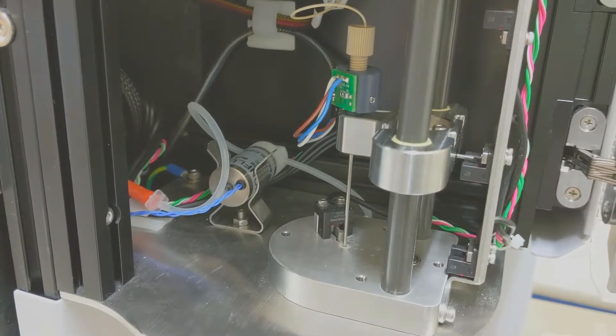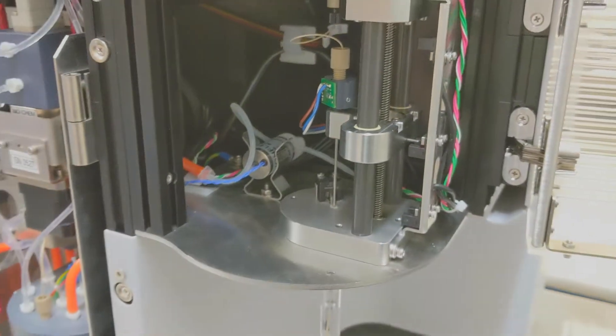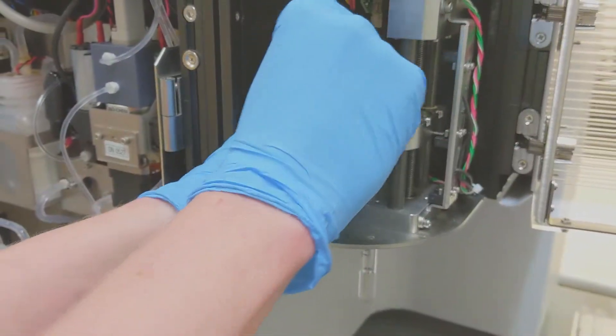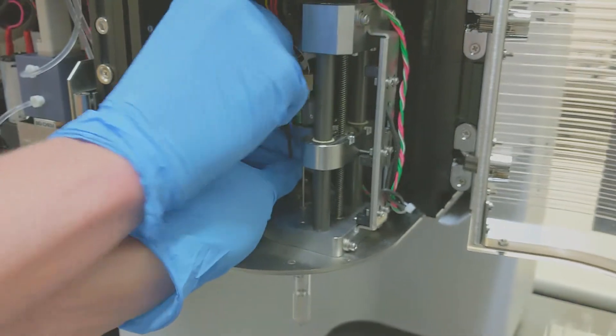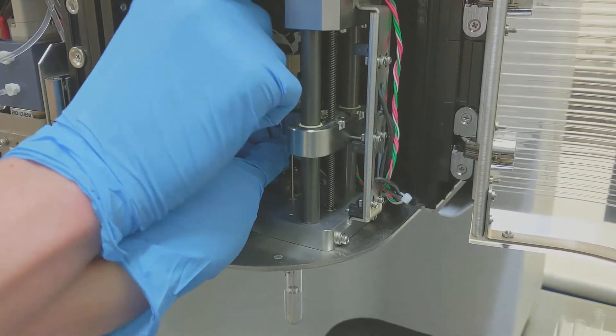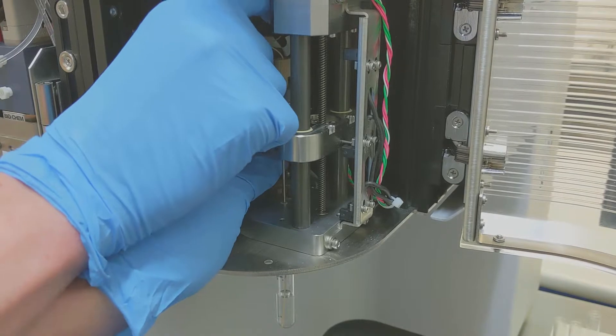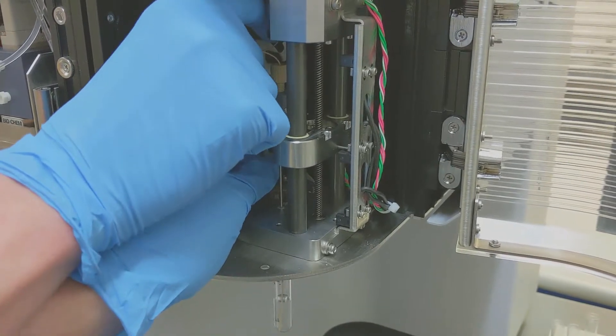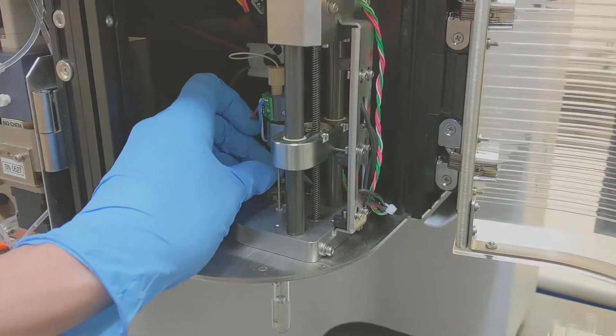Let's go ahead and grab our metric Allen wrench size M1. I'll go in there and loosen up both of these screws. Now be careful while you're working in here not to damage the sample line or any of the cable wires that are in this area.